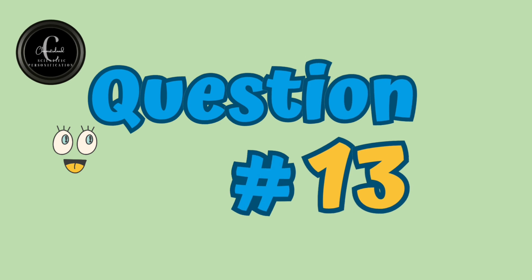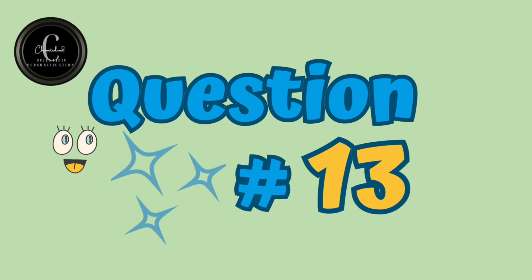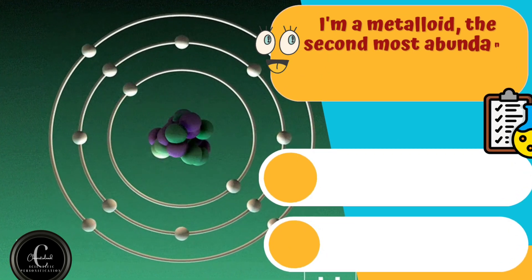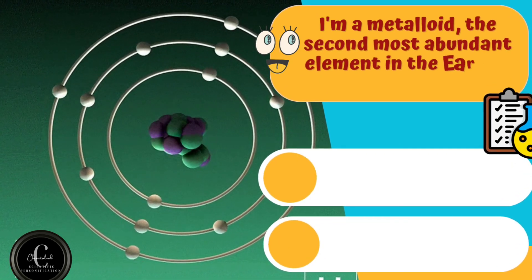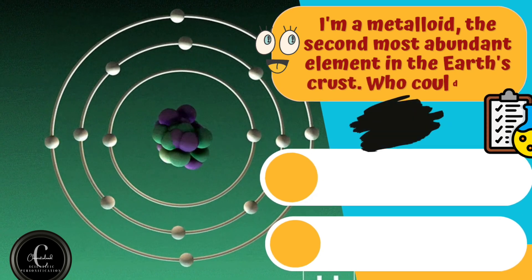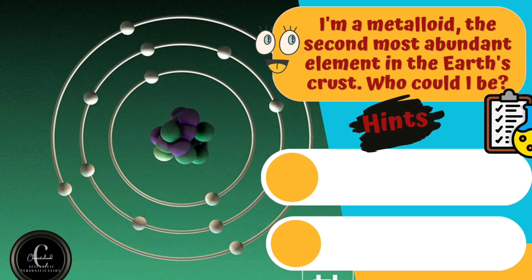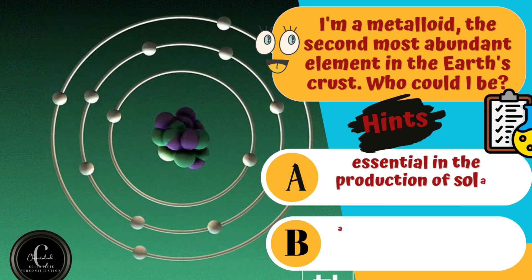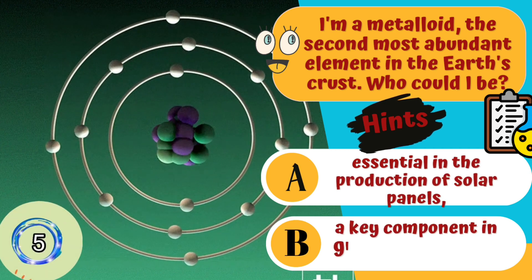Question number thirteen is about element having shiny silver-gray appearance. I'm a metalloid, the second most abundant element in the Earth's crust. Who could I be? Hints are A. Essential in the production of solar panels. B. A key component in glass and computer chips.